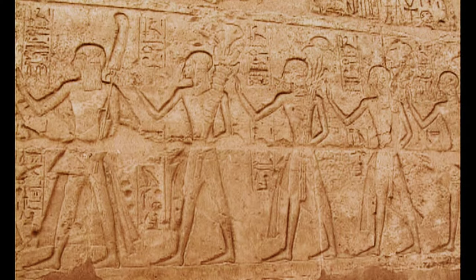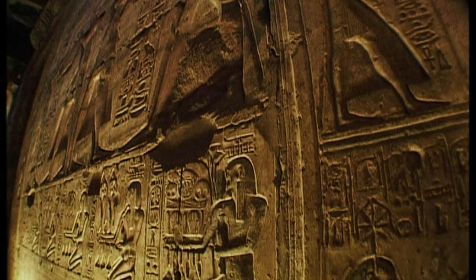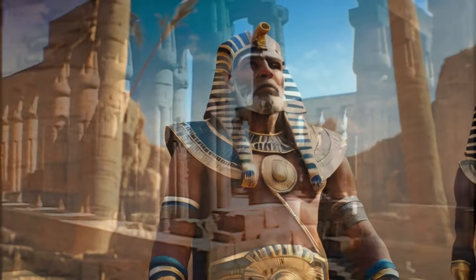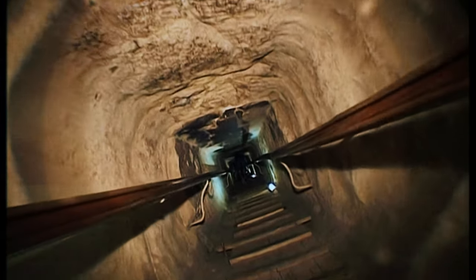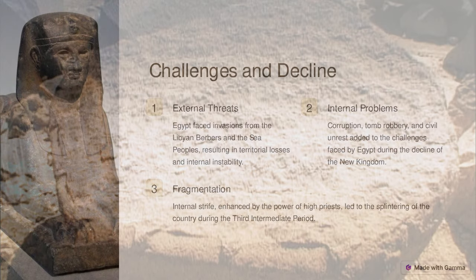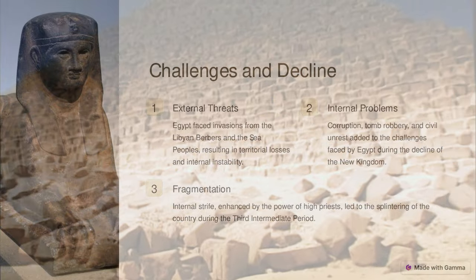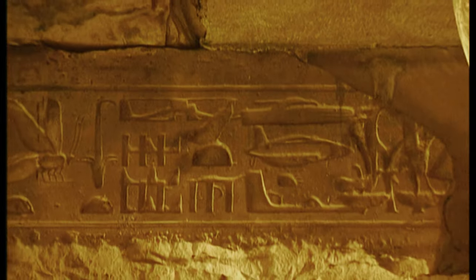Around 1279 BC, Ramesses II, also known as Ramesses the Great, ascended the throne and went on to build more temples, erect more statues and obelisks, and sire more children than any other pharaoh in history. A bold military leader, Ramesses II led his army against the Hittites in the Battle of Kadesh in modern Syria and, after fighting to a stalemate, finally agreed to the first recorded peace treaty around 1258 BC. Egypt's wealth, however, made it a tempting target for invasion, particularly by the Libyan Berbers to the west and the Sea Peoples, a conjectured confederation of seafarers from the Aegean Sea. Egypt eventually lost control of its remaining territories in southern Canaan, much of it falling to the Assyrians. Internal problems such as corruption, tomb robbery, and civil unrest further weakened the state, and the high priests at the Temple of Amun in Thebes accumulated vast tracts of land and wealth, splintering the country during the Third Intermediate Period.